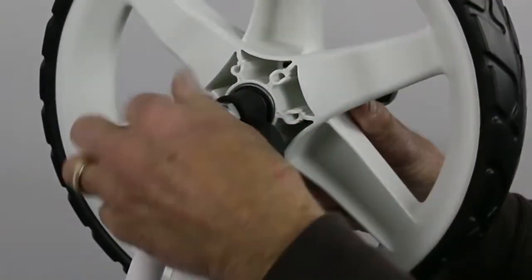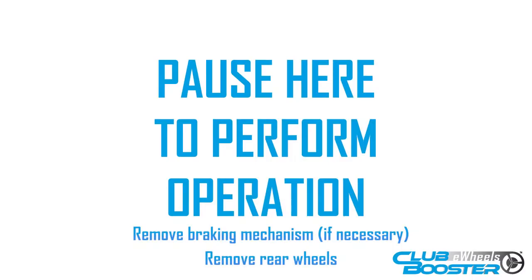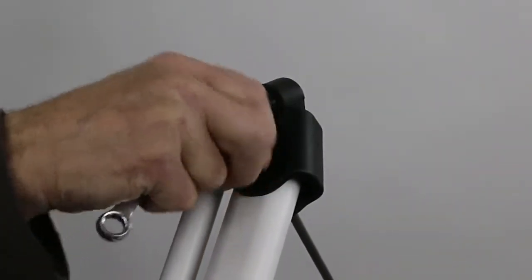Now that the rear brake mechanism has been removed, it's time to remove the rear wheels. Once the rear wheels are removed, you can now remove the wheel pivots from both sides.